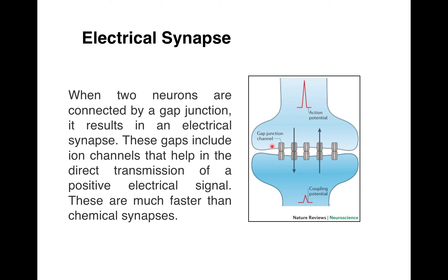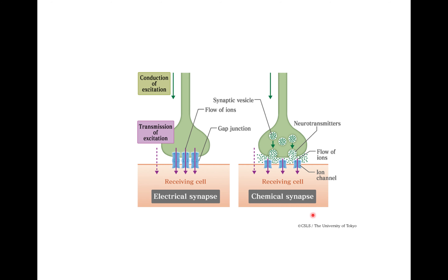In an electrical synapse, two neurons are connected by gap junctions. These gap junction channels include ion channels that help in the direct transmission of positive electrical signals, and these are much faster than chemical synapses. In electrical synapse there is direct conduction of excitation via gap junctions with flow of ions. In chemical synapse there are synaptic vesicles releasing neurotransmitters which excite the next neuron. This is the difference between electrical synapse and chemical synapse.